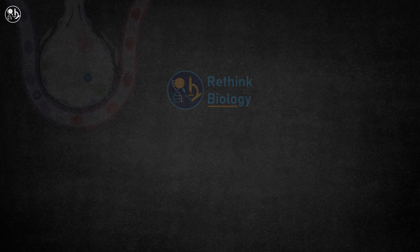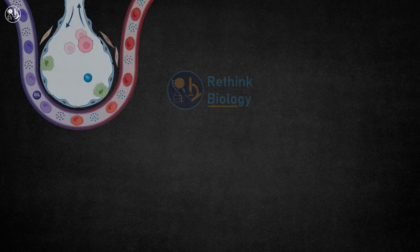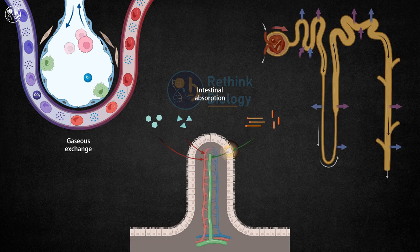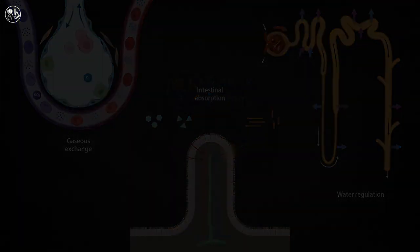Examples of passive transport in the body include the movement of oxygen and carbon dioxide across the cell membrane, the absorption of nutrients in the digestive system, and the regulation of water in the kidneys. Passive transport is crucial for maintaining the proper balance of molecules in the body.